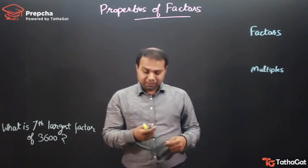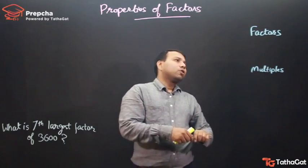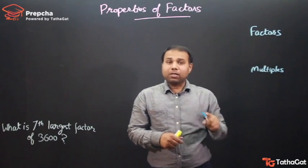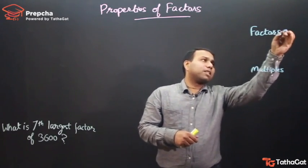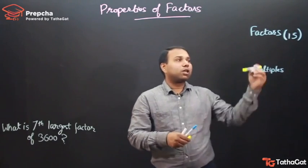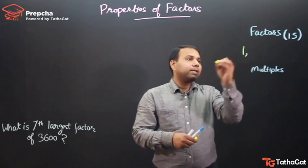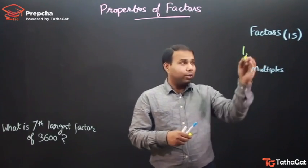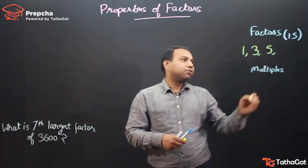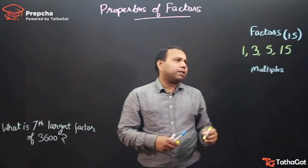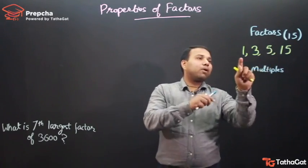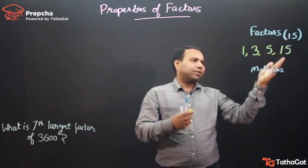Let's take an example. If I take the number 15, what will be the smallest factor of 15? Factors are the numbers which divide the number completely. The smallest number which will divide 15 completely is 1. Then 2 doesn't divide 15, but 3 divides 15. Then 4 doesn't divide, 5 divides, and 15 divides this number completely. So for 15, the number of factors is 4, and they are limited in quantity.